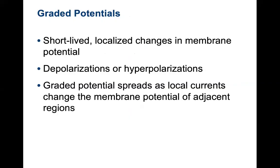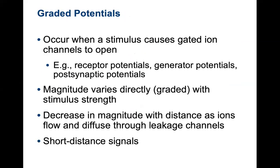Graded potentials are short-lived localized changes in the membrane potential — depolarizations or hyperpolarizations depending on the stimulus. Graded potentials will occur when a stimulus causes a gated ion channel to open. This is typically what we see when you release something like acetylcholine. The more acetylcholine you release, the more gated ion channels you open, the stronger the signal. Graded potentials can eventually get you to what we call threshold — the point at which voltage-gated channels open and you would trigger an action potential.